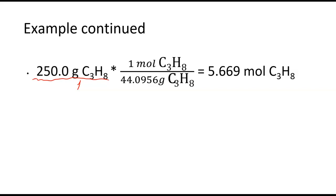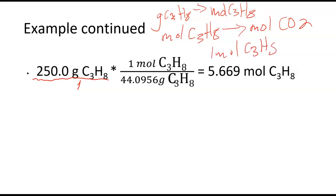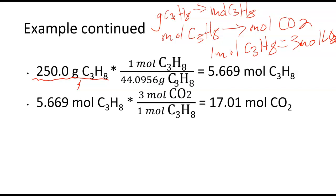Now we want to get from moles of C3H8 to moles of CO2. Remember I made that plan at the beginning. If we look at our balanced equation, we had one mole of C3H8 equals three moles of CO2. I can use that to create my conversion factor. For every three moles of CO2 to one mole of C3H8, I want to make sure my moles of C3H8 are going to cancel. We multiply through, I get 17.01 moles of CO2.